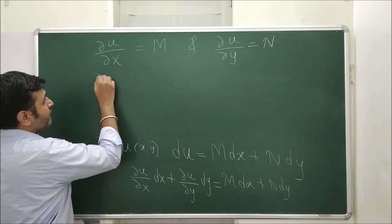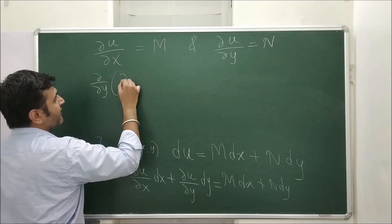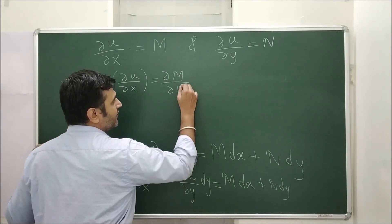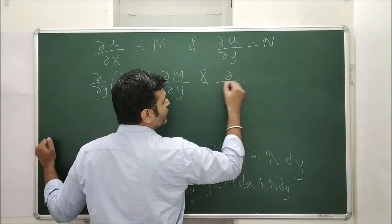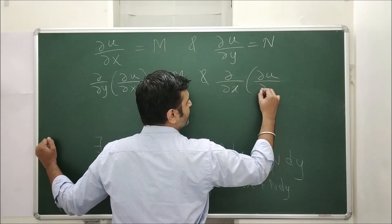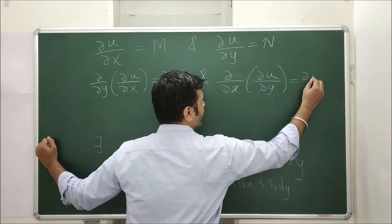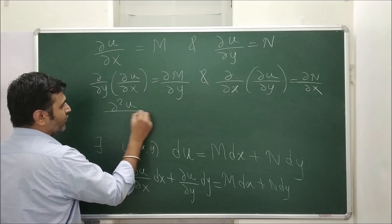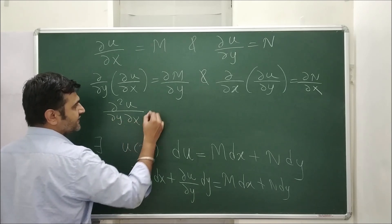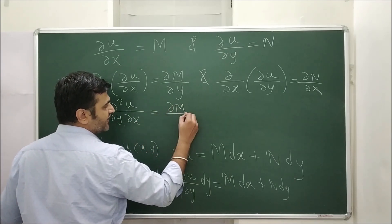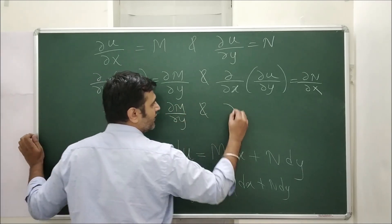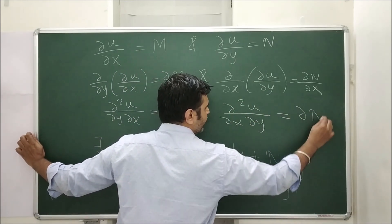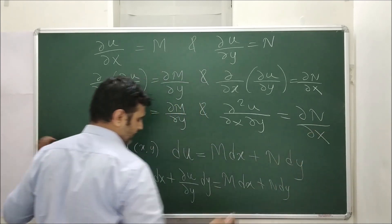Here we differentiate both sides of ∂u/∂x = M with respect to y, giving ∂²u/∂y∂x = ∂M/∂y. And we differentiate both sides of ∂u/∂y = N with respect to x, giving ∂²u/∂x∂y = ∂N/∂x.